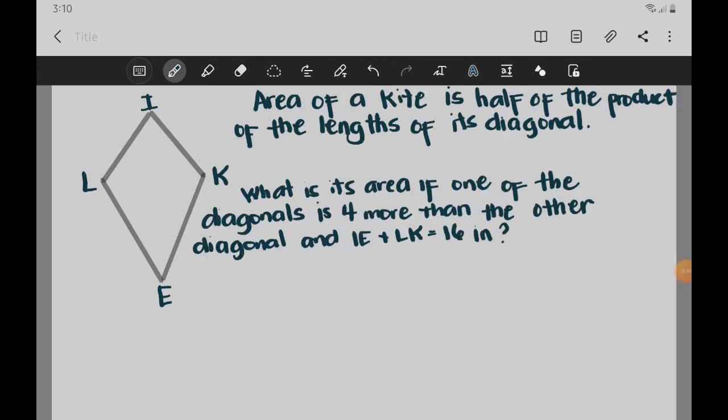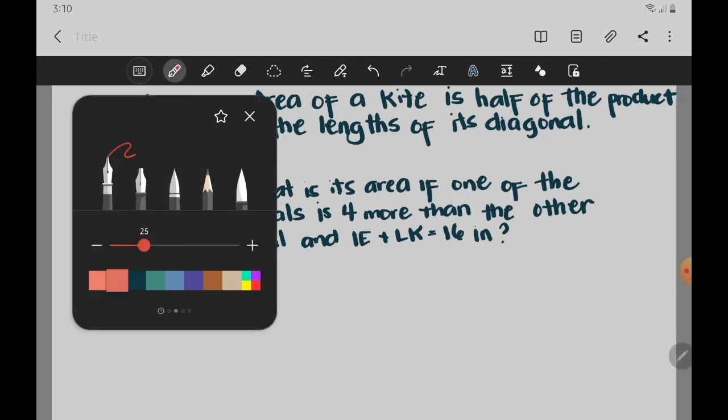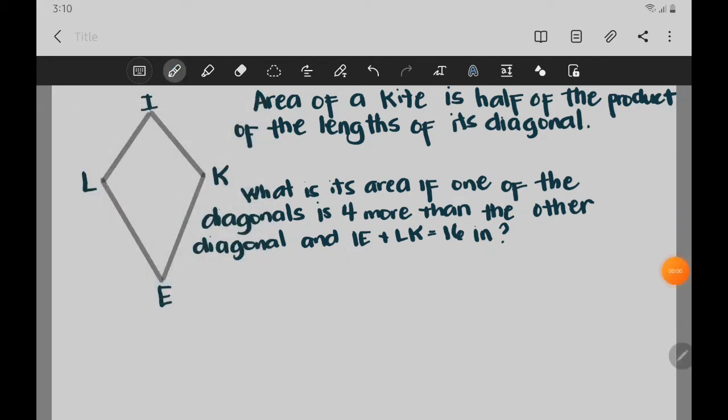Last example, we have area of a kite is half of the product of the lengths of its diagonals. So we are going to use the formula for area. If we are going to write down the formula for area, that is A equals one half, because it says half of the product, so when we say product that's multiplication, of the lengths of its diagonals. So we have D1 multiplied by D2. Meaning half of the product of the two diagonals. So we have the first diagonal multiplied by the second diagonal.